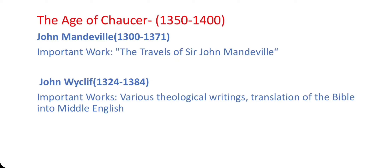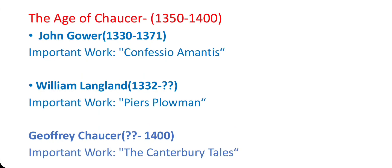Important writers from this age: John Mandeville, 1300–1371 — The Travels of Sir John Mandeville. John Wycliffe, 1324–1384 — various theological writings and translation of the Bible into Middle English. John Gower, 1330–1408 — Confessio Amantis. William Langland, 1332 (death uncertain) — Piers Plowman. Geoffrey Chaucer (birth uncertain, died 1400) — The Canterbury Tales.